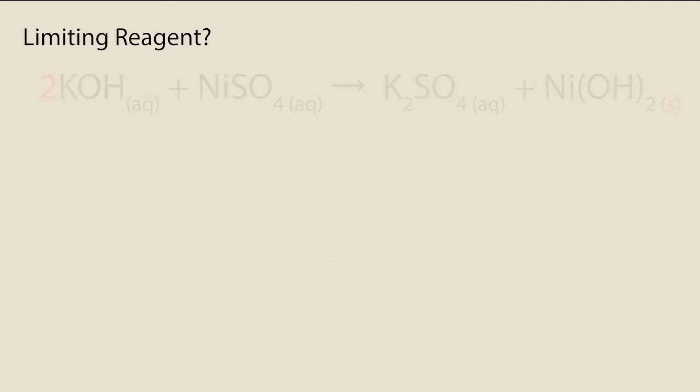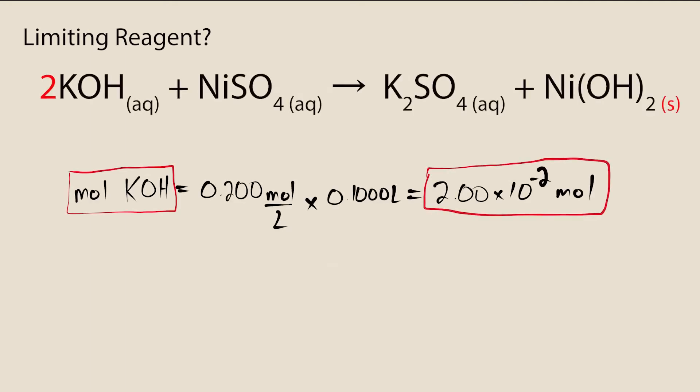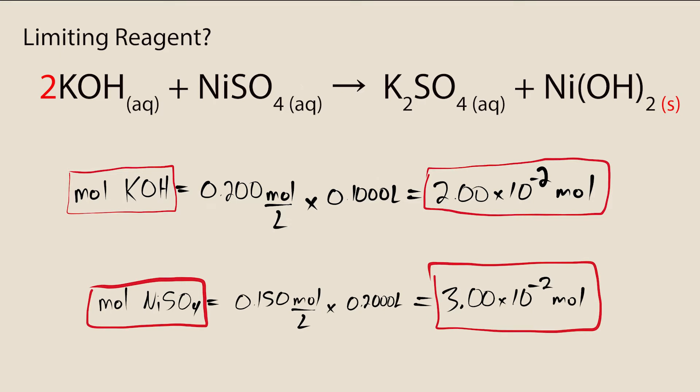In order to figure out which reactant is limiting, we need to calculate the moles of each reactant. This can be done by multiplying their respective concentrations by their respective volumes, as shown here.